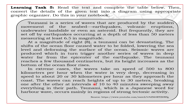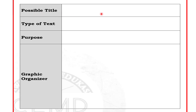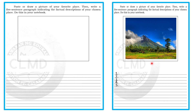Learning Task 5: Read the given text all about a tsunami, then identify the possible title, the type of text, the purpose, and draw the appropriate graphic organizer related to the type of text being used.